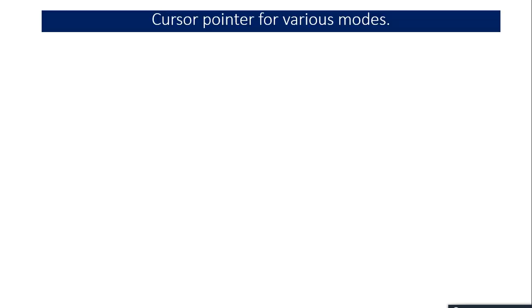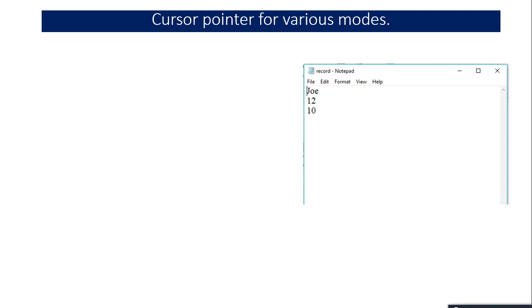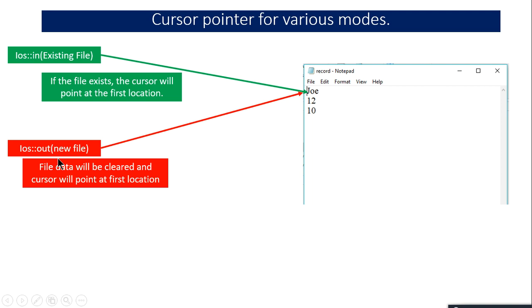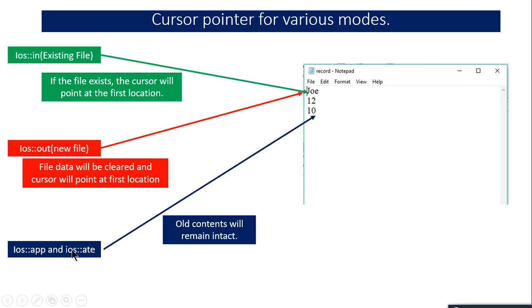Let's look at cursor pointer positions for various modes. If you open a file in ios::in mode and the file exists, the cursor points at the first location — before the first character. If you open in output mode, the contents are cleared and the cursor points to the first position, creating the file if it doesn't exist. If you open in append or append-to-end mode, old contents remain intact and the cursor points to the end of the file.